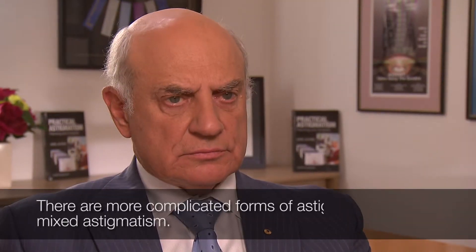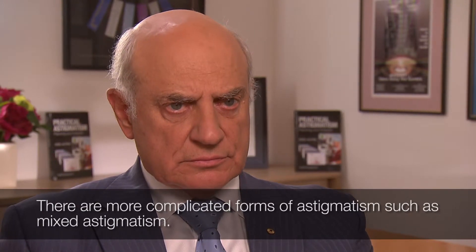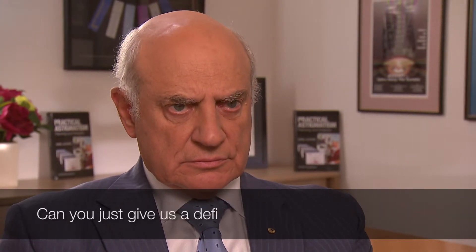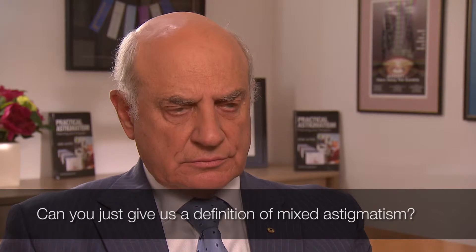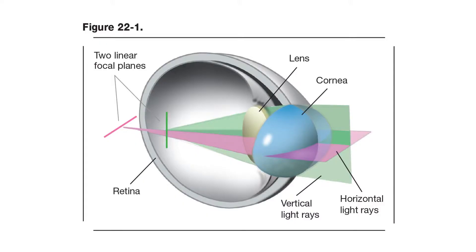There are more complicated forms of astigmatism such as mixed astigmatism. Mixed astigmatism is when you have a greater amount of cylinder magnitude than sphere, and the sphere and cylinder are of opposite sign. Optically, in cases of mixed astigmatism there are two focal planes — one in front of the retina and one behind the retina — unlike hyperopic or myopic astigmatism where the focal planes lie either both in front of or both behind the retina.